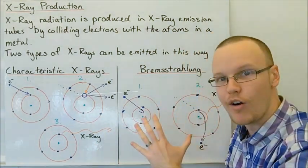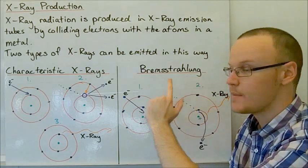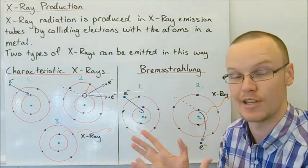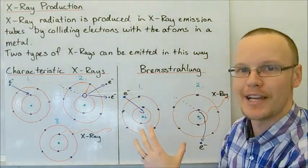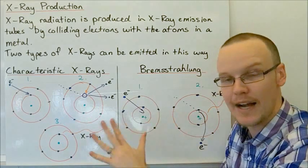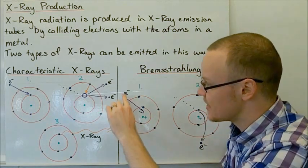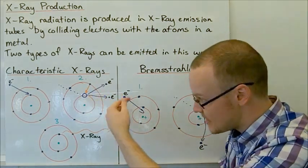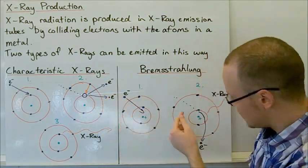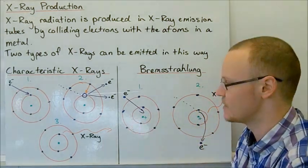The second type of X-ray that can be produced is called Bremsstrahlung. Bremsstrahlung is a German word meaning 'braking radiation' — braking as in slowing down. In this scenario, the electron isn't necessarily stopped and doesn't interfere with any part of the atom in the metal. The way this works is that the negative charge of the incoming electron, being fired towards the atom, is slowed down and moves in a curve around the positive charge of the nucleus.